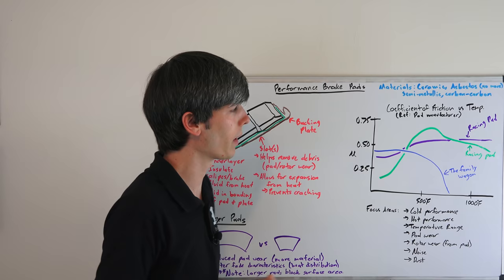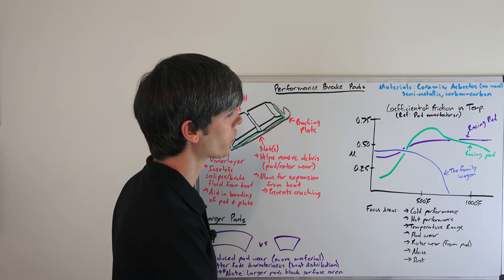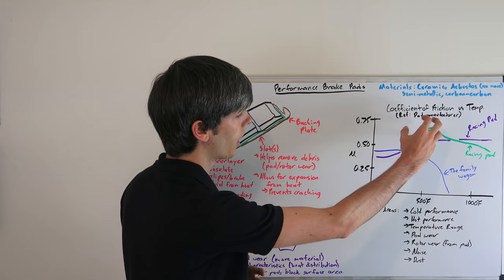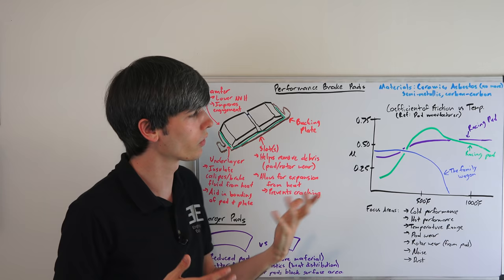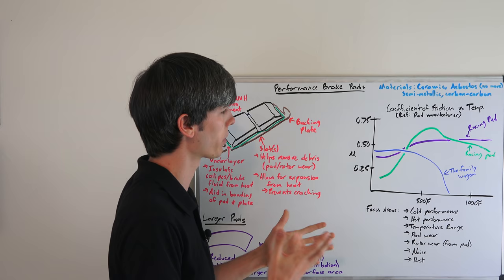So something that has, you know, depending on the race and how much braking is involved, you may want something that has better friction coefficients at a lower temperature or at a higher temperature, or something that's just very consistent throughout. So there'll be all kinds of different variations, and actually the pad manufacturers, if you're looking at buying these, a lot of them will show you this graph so you can get the pad exactly for the application that you want. If you know there's going to be a ton of braking and you want it to be consistent, you know, getting something with a flatter curve at higher temperatures.